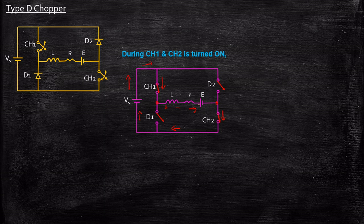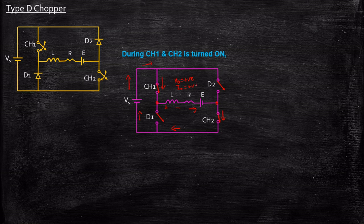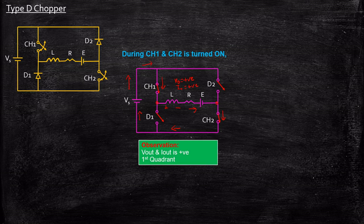In that case, Vout is positive because you have a back EMF with polarity plus and minus, and the inductor also has polarity plus and minus. The overall voltage at these two points will be plus and minus, and the current is flowing from the source to the load, so Iout is also positive. The important observation here is that Vout and Iout are both positive, meaning it is operating in the first quadrant.